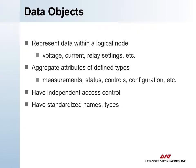Data objects within 61850 represent the real data you're after within the logical node. Examples include voltage measurements, current relay settings, and various controls. They typically aggregate attributes of different types, so they're structures — for instance, the Y class containing a set of measurements for each of the different phase measurements. They typically have independent access control, and there is standardized naming and typing for all of them.